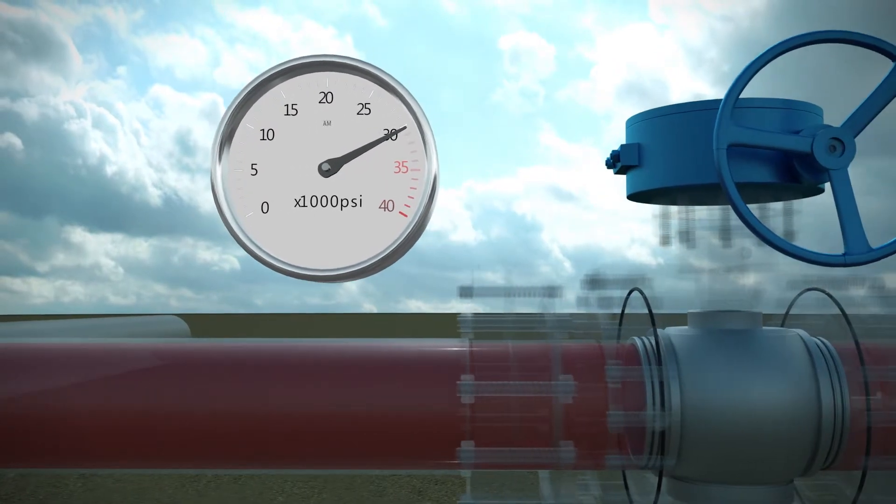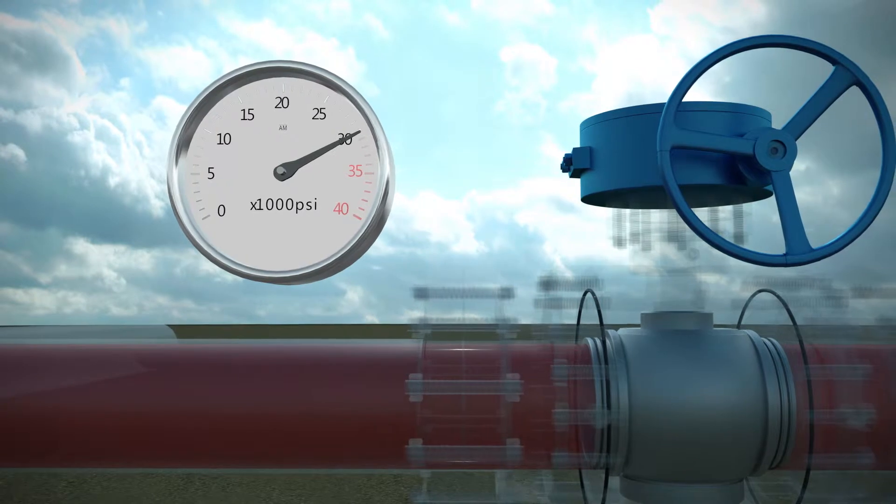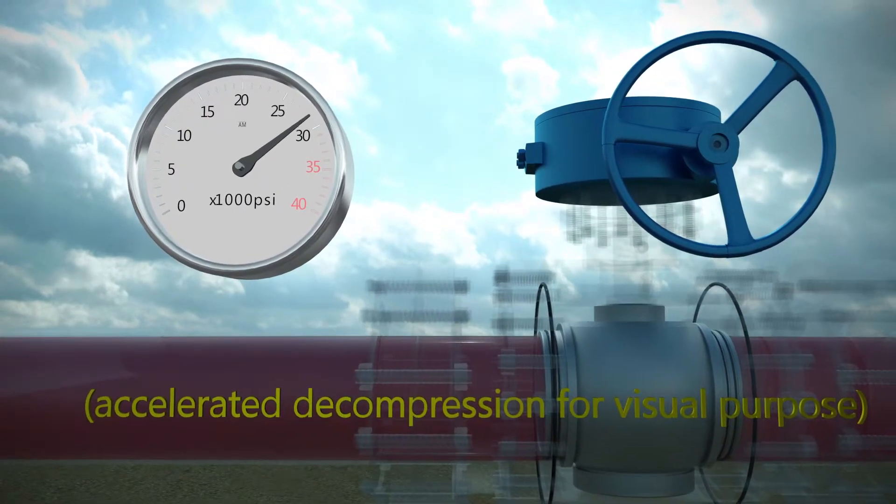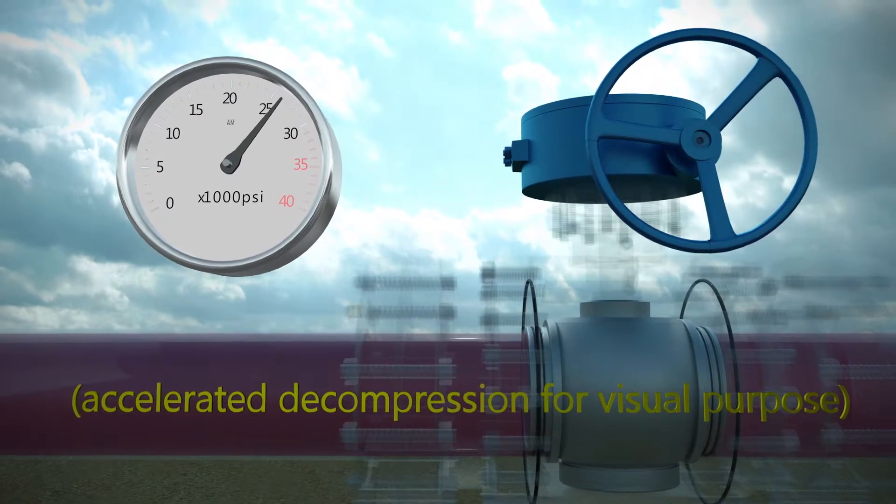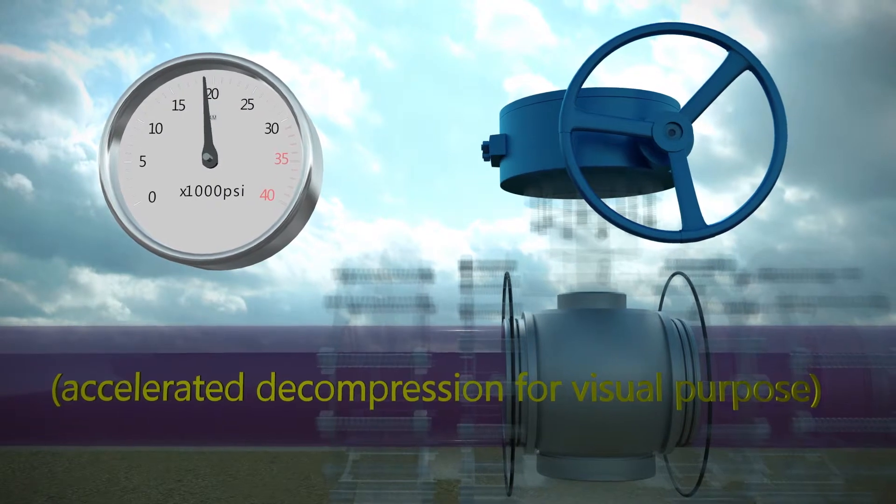This phenomenon occurs when the seals are exposed to high pressure gas at elevated temperatures for a prolonged period of time. When the external pressure is reduced, the gas dissolved within the material comes out of solution to form micro-bubbles. As the gas expands, it will permeate out of the material.